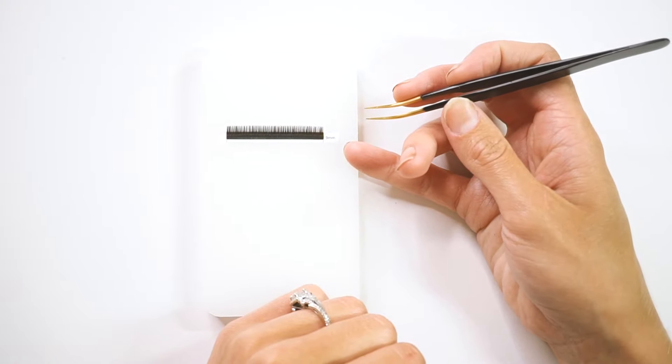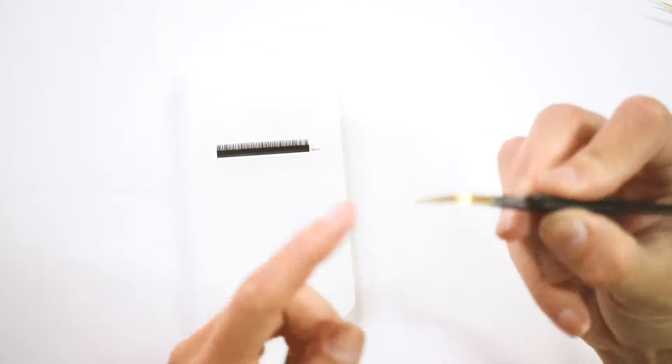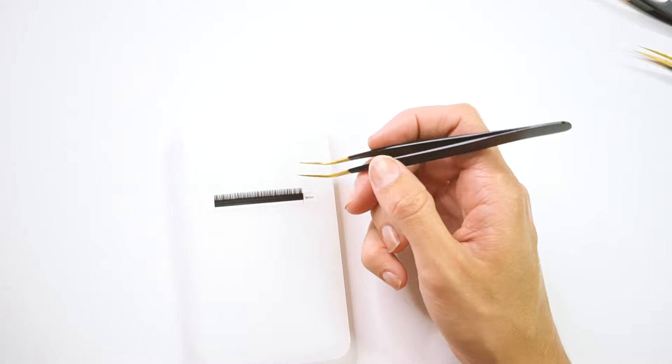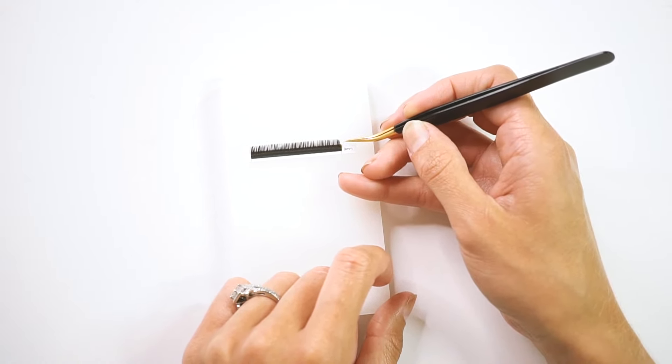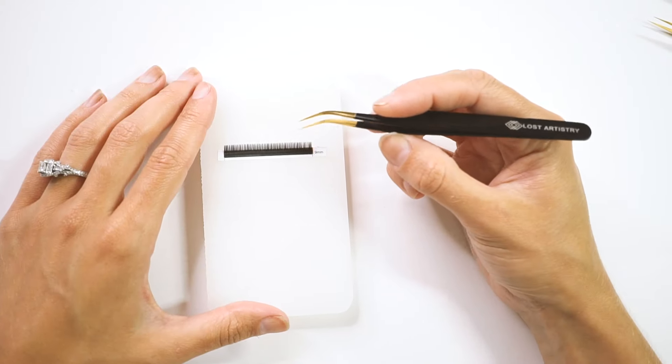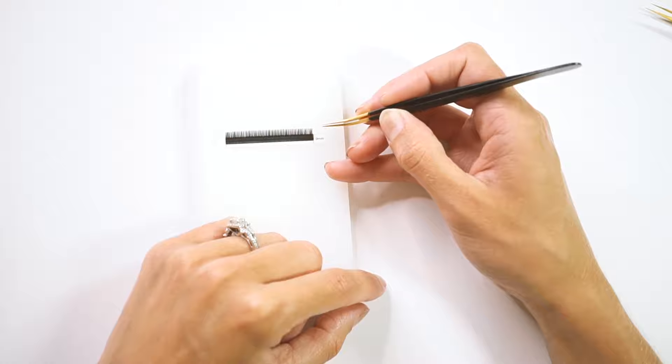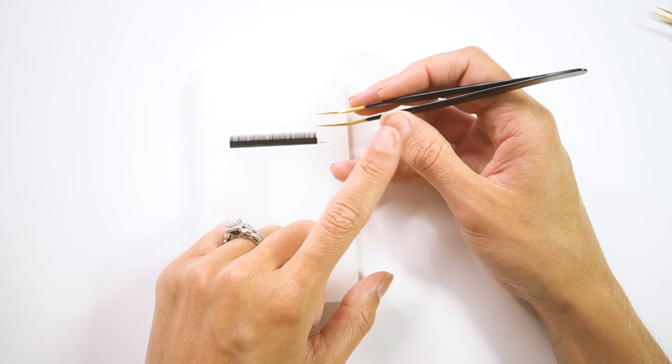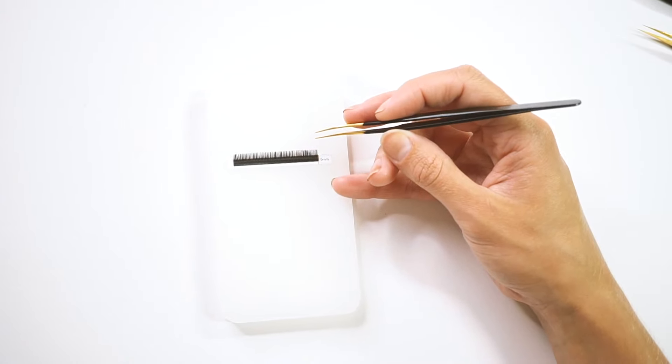Another difference to point out is when we're coming in, when we're isolating, our tweezers are closed, as we discussed. But now when we're picking up our lash, our tweezers are open until we're ready to pick up the lash. So something that is the same, though, is that when we open and close our tweezers, when we're picking up the lash, our thumb stays stationary and our pointer finger is the finger that moves.